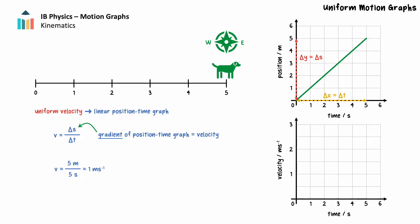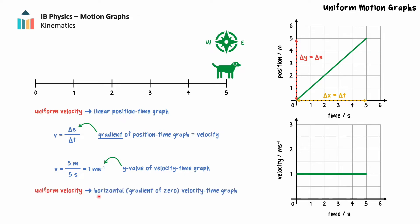Now let's consider how we can represent this on a velocity time graph. A velocity time graph represents the relationship between velocity and time for an object's motion. In the case of uniform motion, the object travels with a constant velocity. This means that its velocity does not change over time, and as a result, the velocity time graph for uniform motion appears as a flat line. The velocity we calculated from the position time graph is the vertical axis intercept of the velocity time graph. Uniform motion produces a horizontal velocity time graph with a gradient of 0.